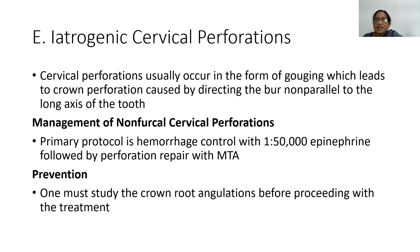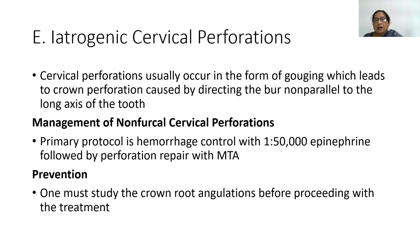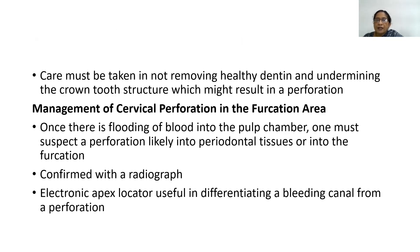The next mishap is iatrogenic cervical perforations. Cervical perforations usually occur in the form of gouging, leading to crown perforation caused by directing the bur non-parallel to the long axis of the tooth. The management of cervical perforations involves hemorrhage control with 1:50,000 epinephrine followed by perforation repair with MTA. To prevent this, study the crown-root angulation before proceeding with treatment.